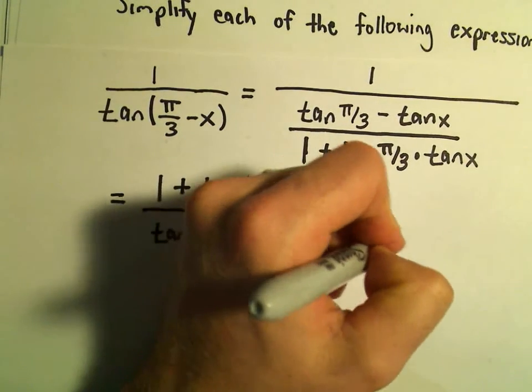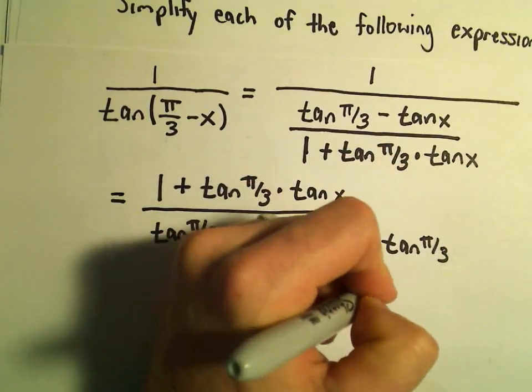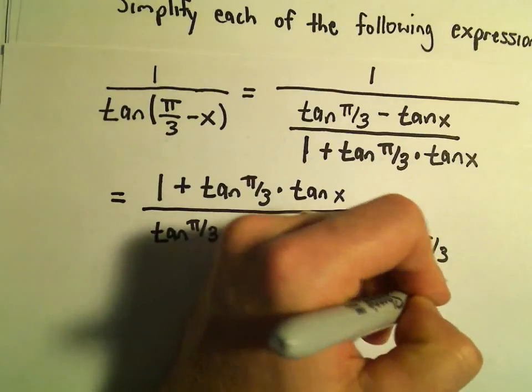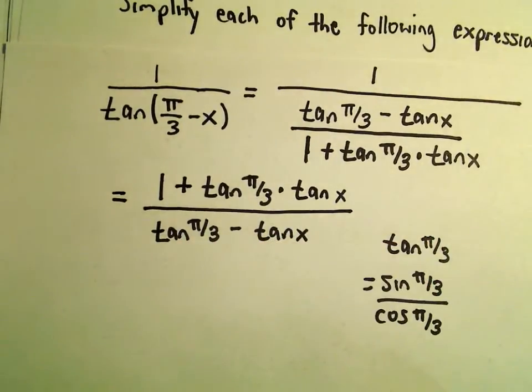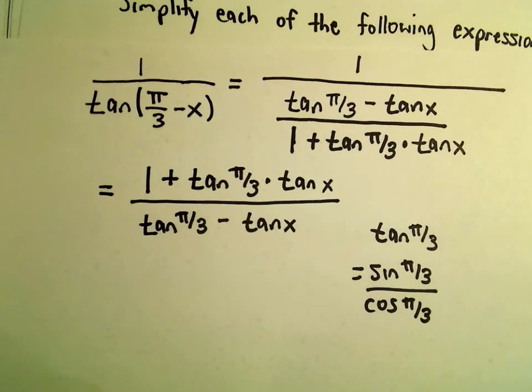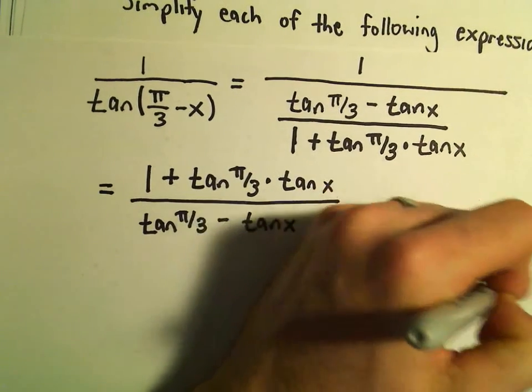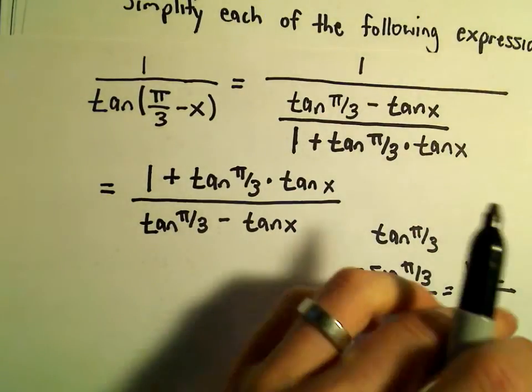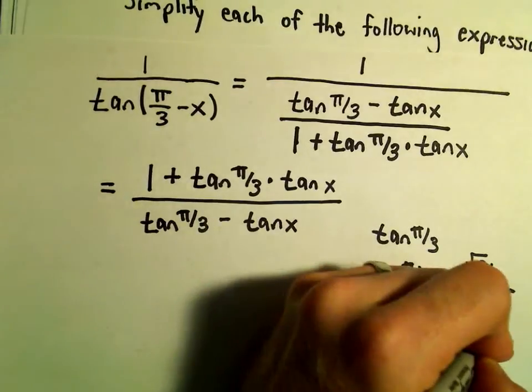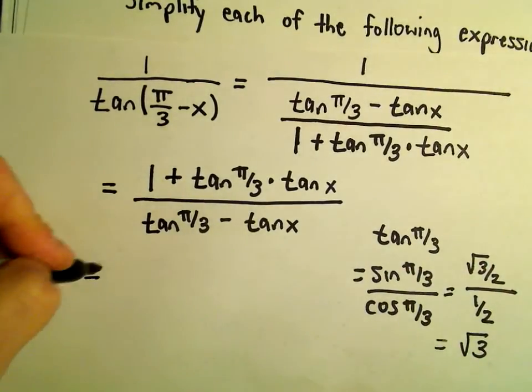Tangent of π/3 equals sine of π/3 over cosine of π/3. Sine of π/3 is √3/2, cosine of π/3 is 1/2. If we flip and multiply, this reduces to √3. Now I'll plug that in.